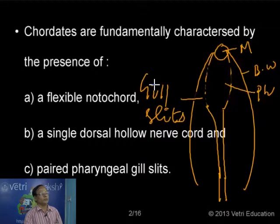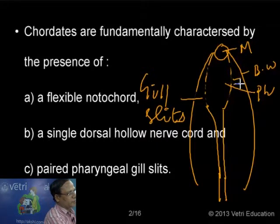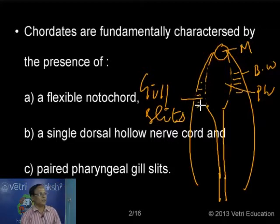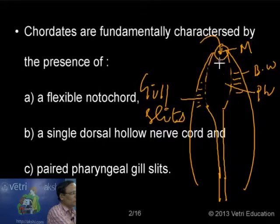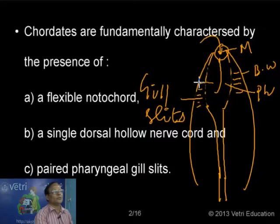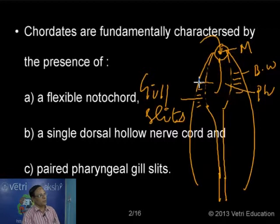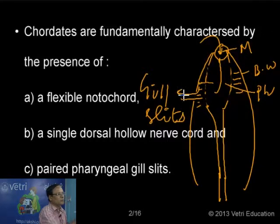Between the pharynx and the body wall, we have the gills. The gills are formed in the gill chamber between the body wall and the pharynx. The animal takes water through the mouth, the water reaches the pharynx, from the pharynx the water goes through the gill slits into the respiratory organs, the gills. The exchange of gases is possible and finally it is leaving from the body.